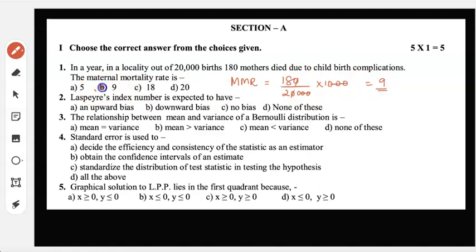Second: Laspeyre's index number is expected to have an upward bias, downward bias, no bias, or none of these. The correct option is A, an upward bias. Third: the relationship between mean and variance of a Bernoulli distribution is mean equal to variance, mean greater than variance, mean less than variance, or none. The correct option is B, mean is greater than the variance.